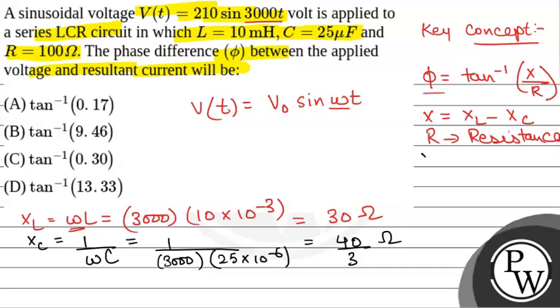So X will be equal to XL minus XC, that is 30 minus 40 over 3 ohm. That will be equal to 50 over 3. So X equals 50 over 3 ohm.